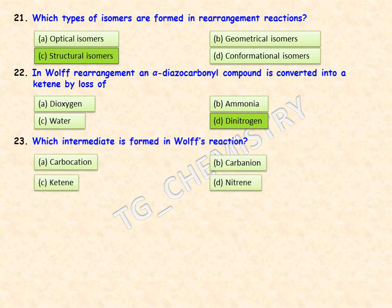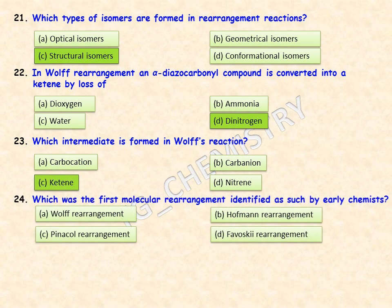Which intermediate is formed in the Wolff reaction? In Wolff's reaction, the intermediate formed is a ketene, so option C is the right answer.